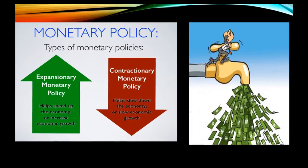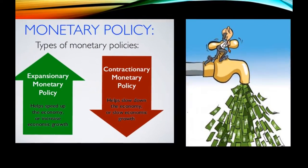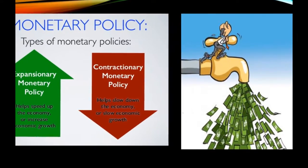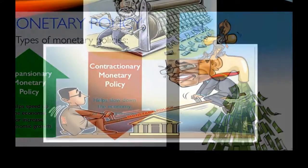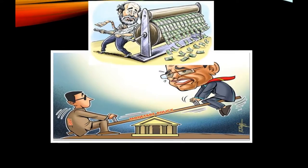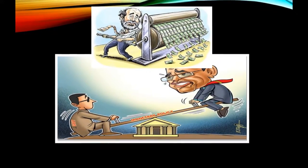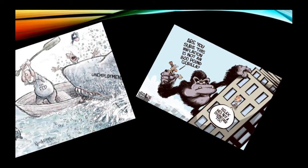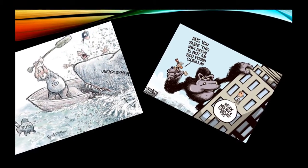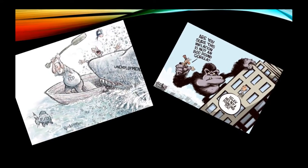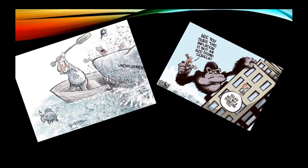An example of expansionary monetary policy is when the Federal Reserve takes action to influence the economy by decreasing the federal rate. This will cause more money to circulate throughout the economy while interest rates decrease. Inflation will rise while unemployment decreases. Decreasing the federal rate promotes production, which will cause GDP to rise.